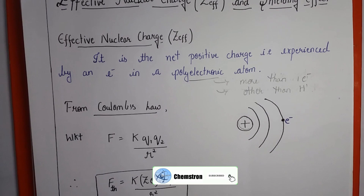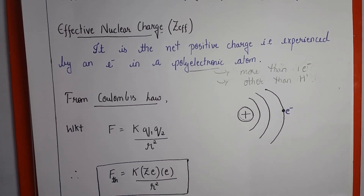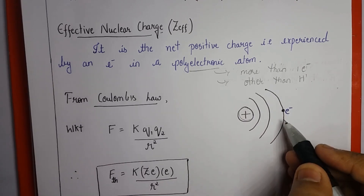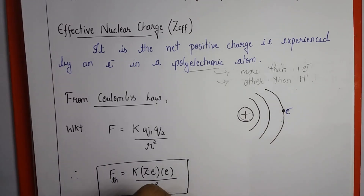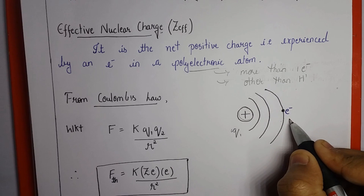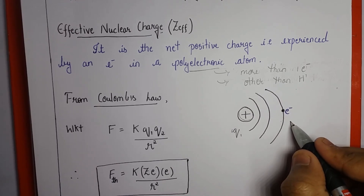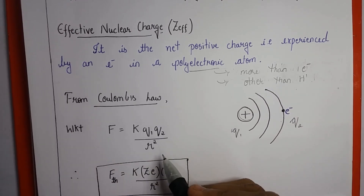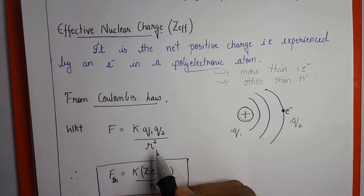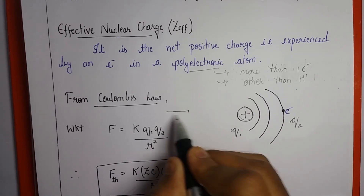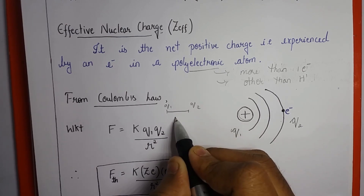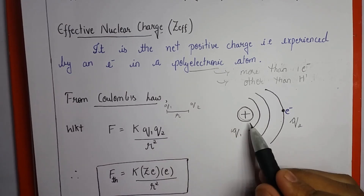To understand this precisely, consider an atom with a positive charge nucleus at the center and a valence electron. Let the positive charge nucleus be a point charge q1 and the electron be another point charge q2. From Coulomb's law, F equals k times q1 times q2 divided by r squared, denoting the force of attraction between two point charges separated by distance r.